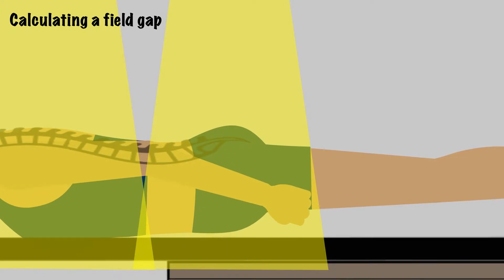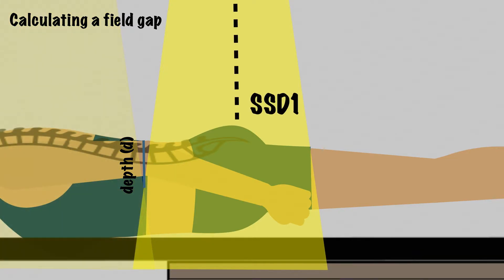First, let's draw two lines, one from the junction of the fields up to the skin surface, which is the depth D, and one from the source of this field down to the skin surface, which is the source to skin distance, SSD1. We'll call these distances along the patient surface G1, which makes up part of the gap length, and L1, or length 1, which is the length from the central axis to the edge of the field at isocenter.